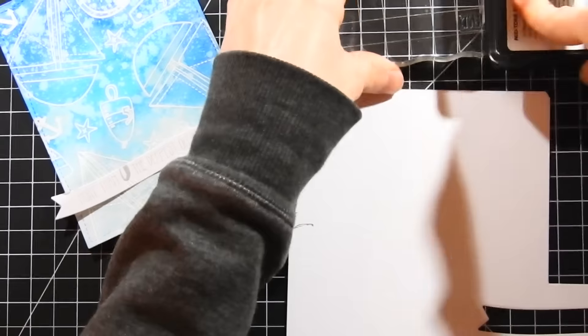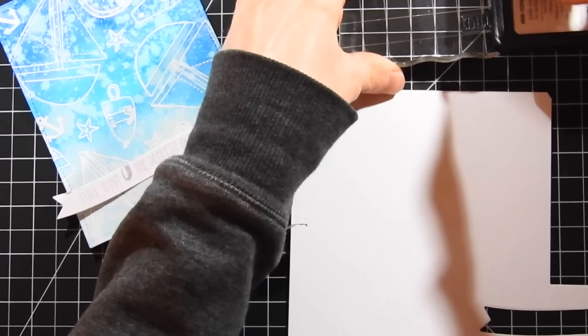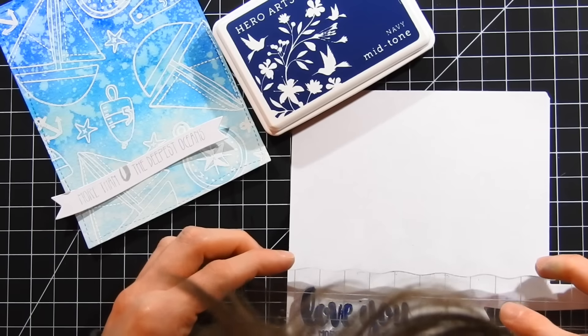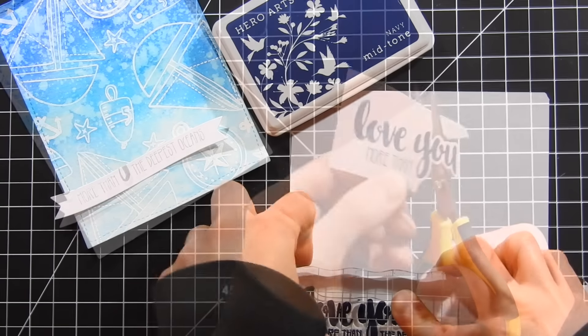I'll ink up my stamp good and then press this down onto my paper. After I press that down, I'm going to go ahead and start fussy cutting my sentiment out. I love fussy cutting sentiments out—it's something that I really think adds a lot to the card and I love how you can get extra dimension with that sentiment when you're fussy cutting.